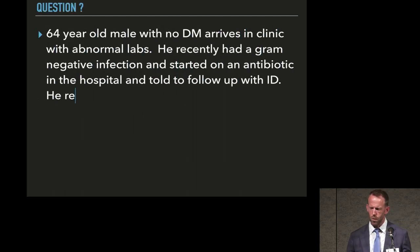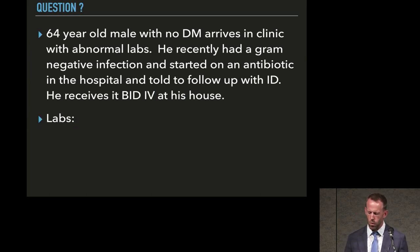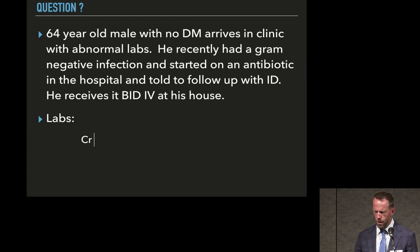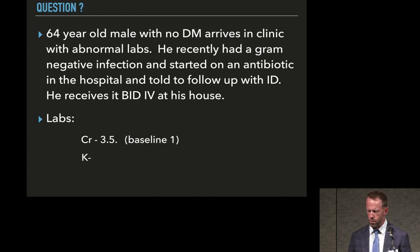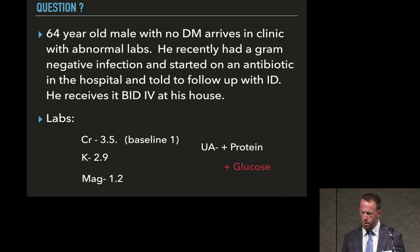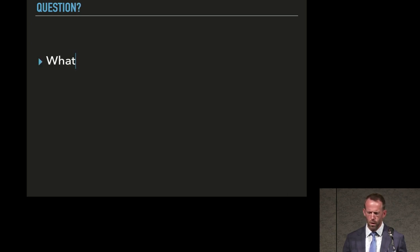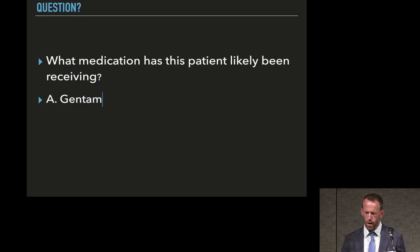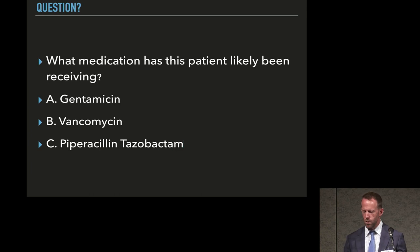Another case: a 64-year-old male with no diabetes presents with abnormal labs after a gram-negative infection treated in hospital with a BID antibiotic. Creatinine is now 3.5, potassium is low, magnesium is low, and urine shows protein and glucose despite no history of diabetes. What antibiotic is this? The answer is gentamicin — and the low potassium, low magnesium, glucosuria, and proteinuria are the key clues.